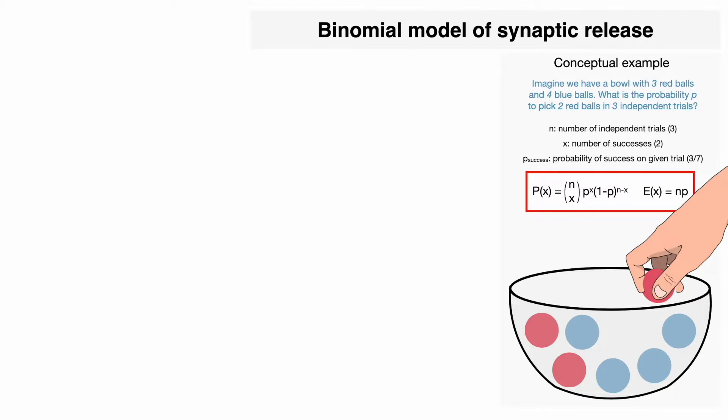Also, the expected value of this distribution is equal to the number of trials n times the probability p. When we apply it to our problem, we get that the probability to pick two red balls out of three trials is about 30% and that we expect a value of about 1.29. The expected value in our case means that we should expect to pick 1.29 red balls in three trials.